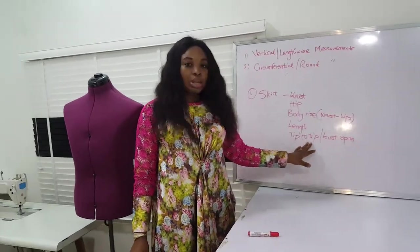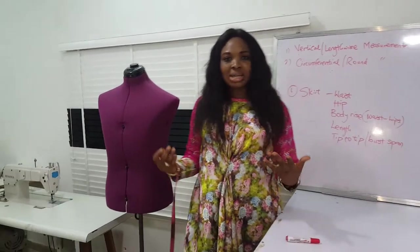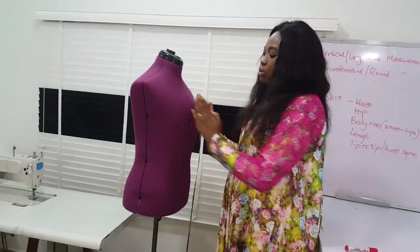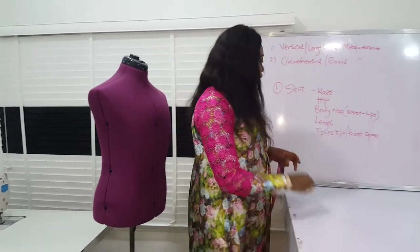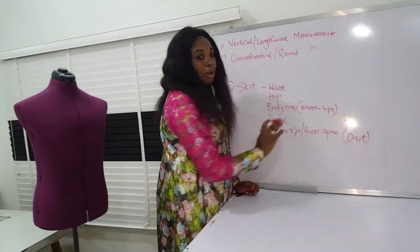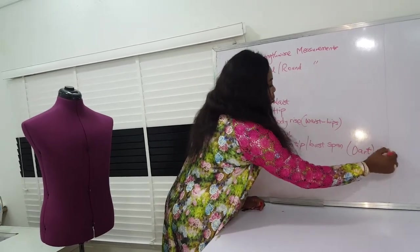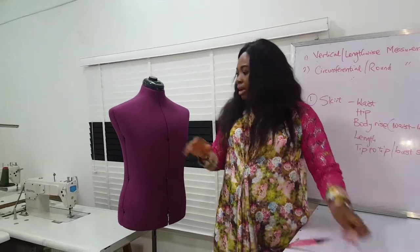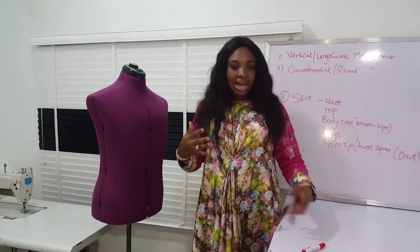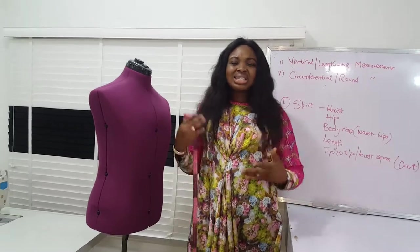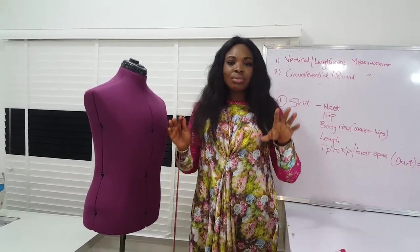Then we take the tip-to-tip or bust span measurement. This is the distance between one nipple point to the other nipple point. The essence of taking the tip-to-tip or bust span measurement is to give shape to our clothing. Our body is not flat — we have areas that are protruding and areas that are inward — so we need to capture all these measurements. It takes care of the excess fabric, making your garment sit right on you.